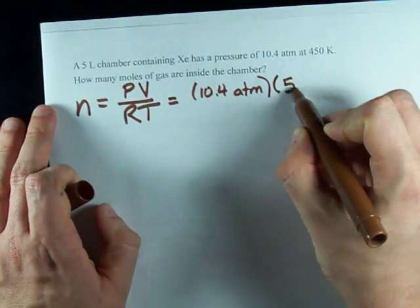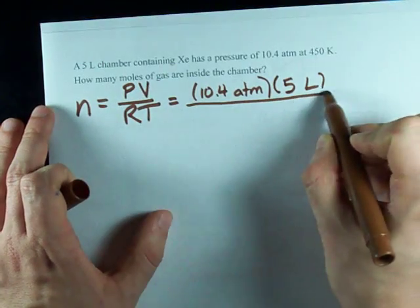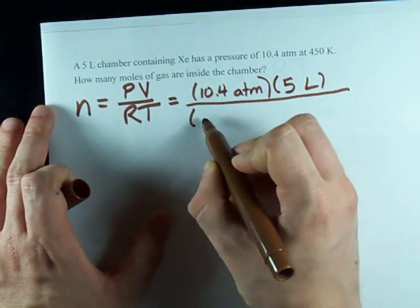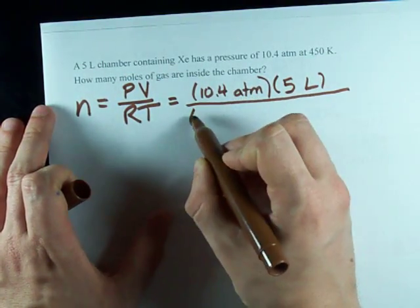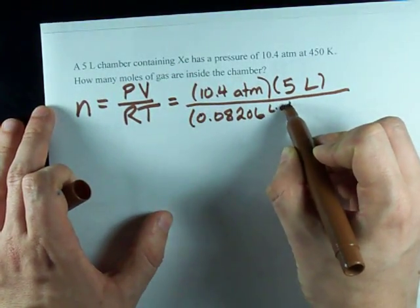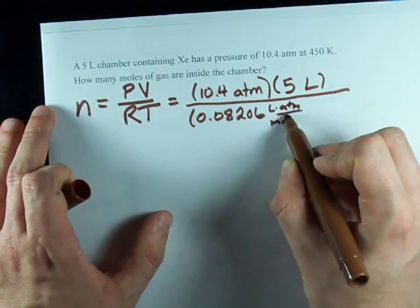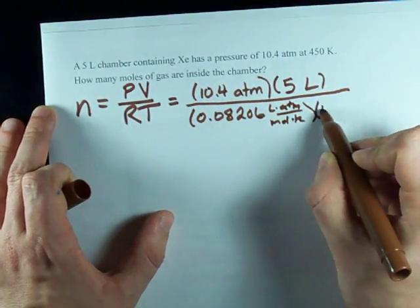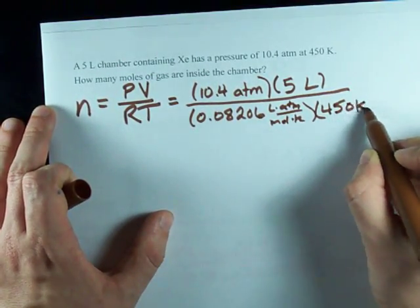Ah, yeah, I stopped filling these in, didn't I? Volume is 5 liters, atmospheres again. So, 0.08206 liters, atmospheres per mole Kelvin, and 450 on bottom.